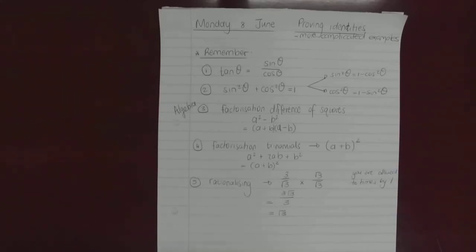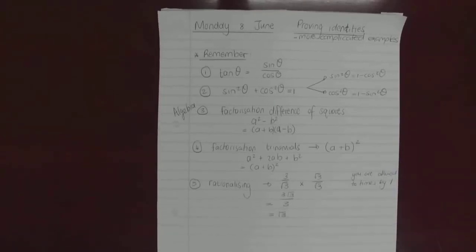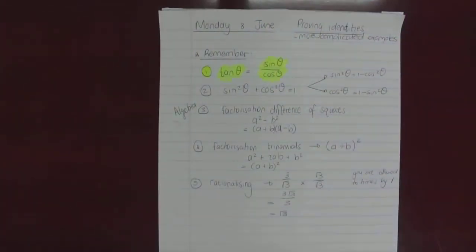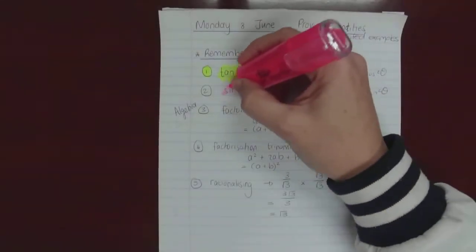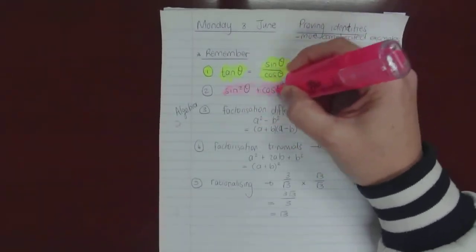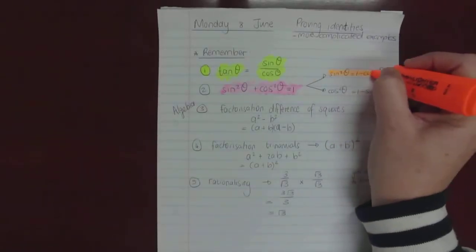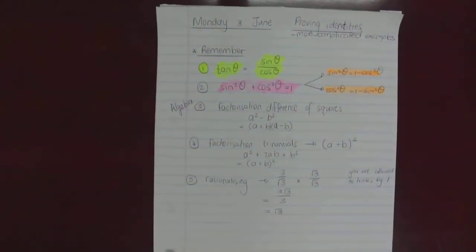I've made a little summary of what to remember. There are five things to remember when we do these complicated ones. The first one is that tan theta in any form can be written as sin theta over cos theta. When I say any form, I mean when it's tan squared theta, it will be sin squared theta over cos squared theta. I can only use sin squared plus cos squared — I can write it equal to 1. Using that identity equation, I can isolate sin squared theta as 1 minus cos squared theta, or write cos squared theta as 1 minus sin squared theta.